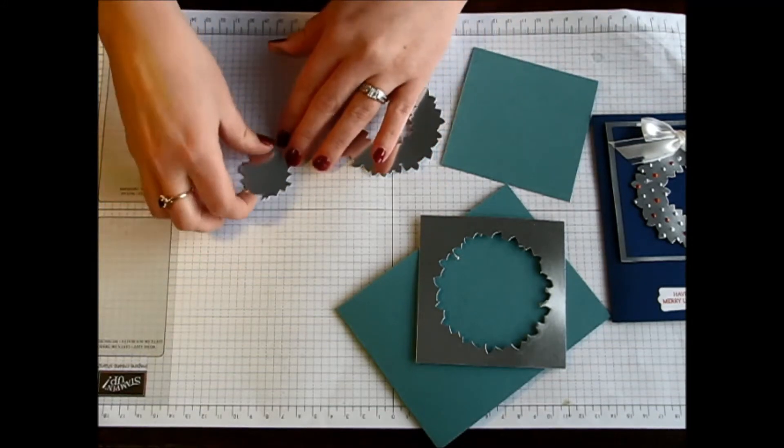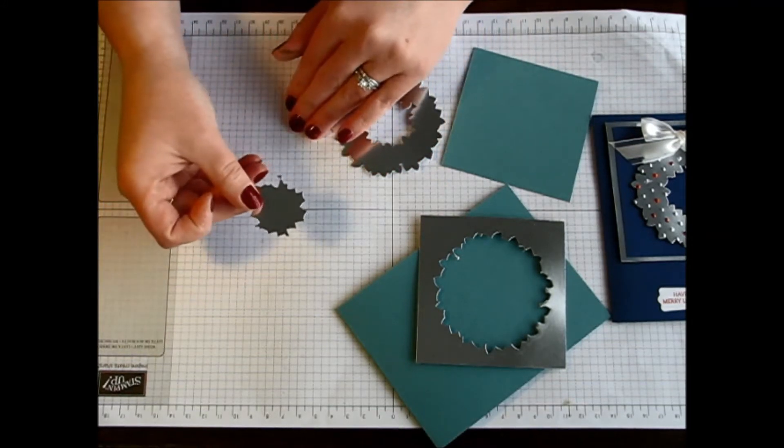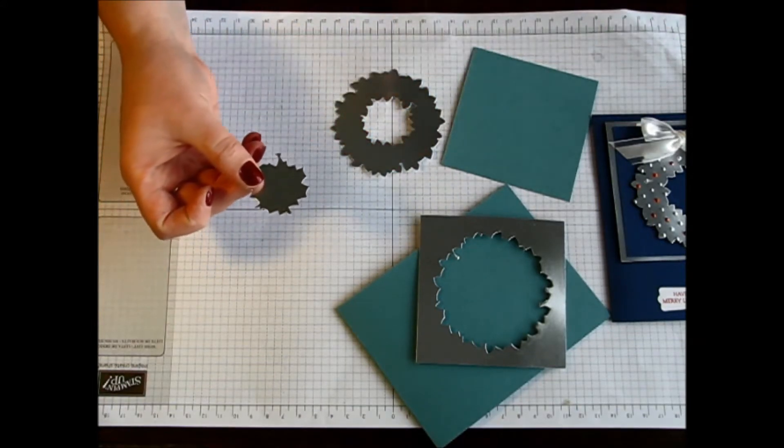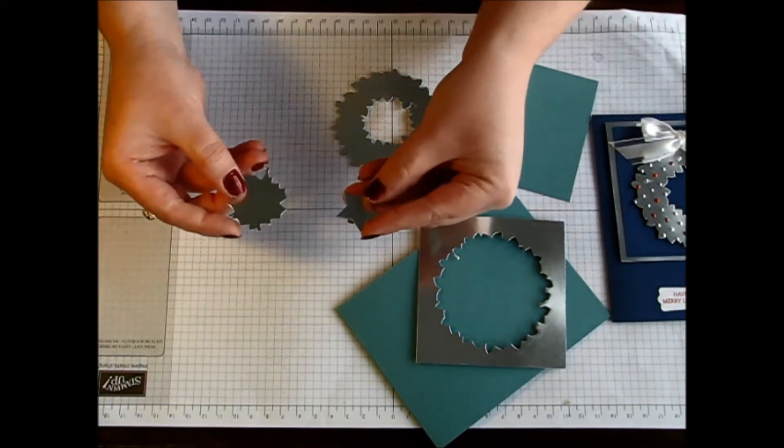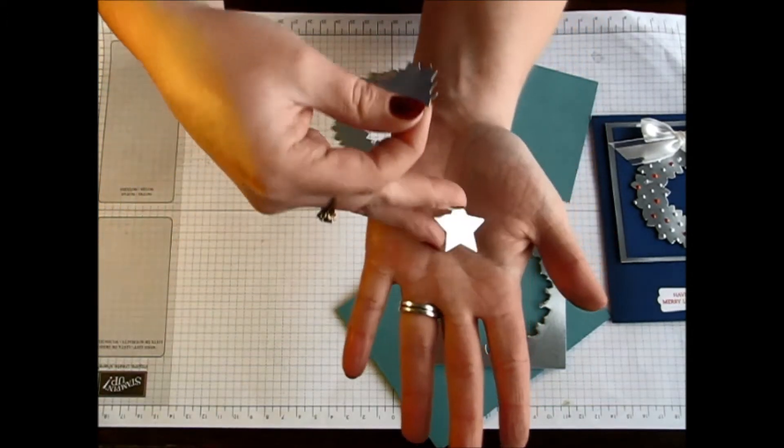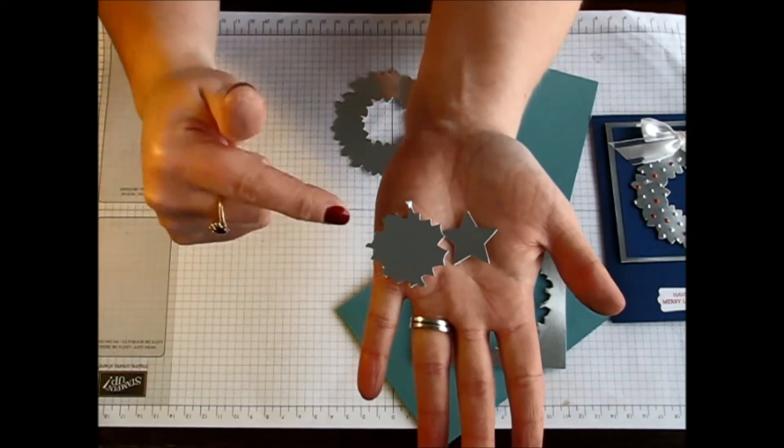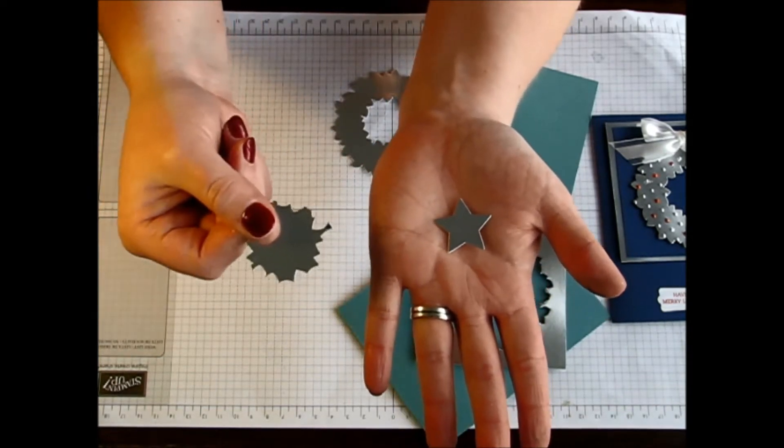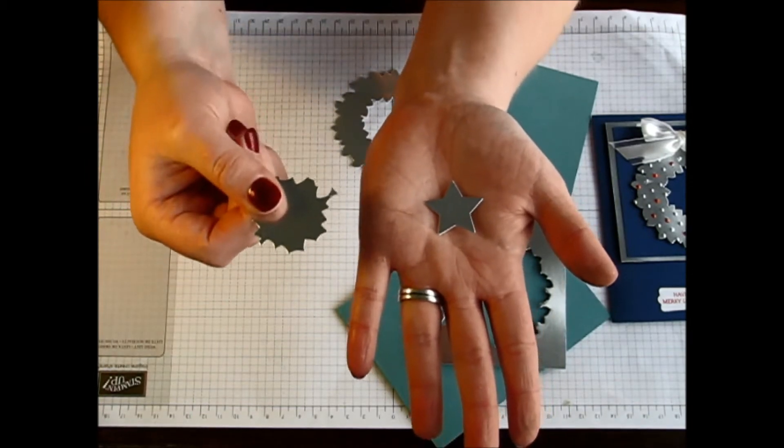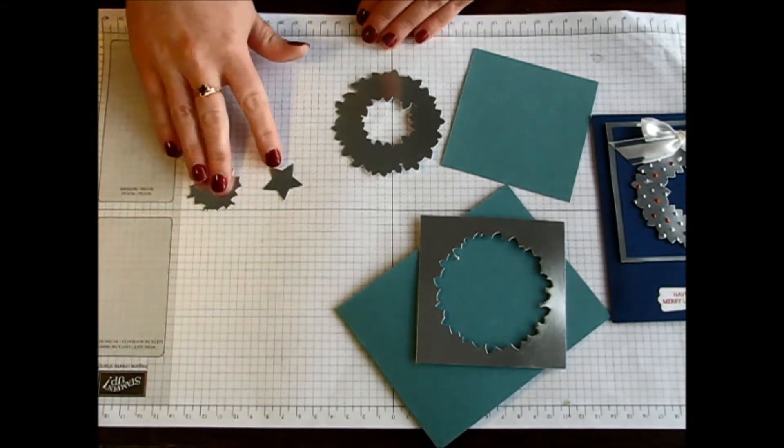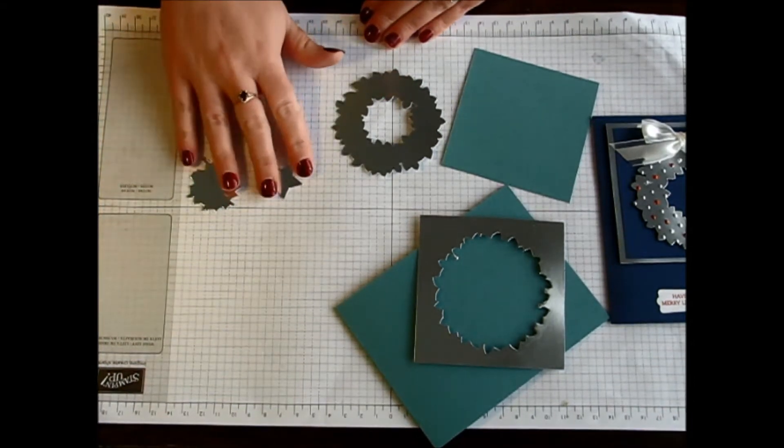The other cool thing that I noticed was this little piece, you can use your star framelits and you can actually get this little bitty star out of it. So that little star can be created out of this. So you can still use this little scrap piece for even another project. How amazing is that? I love being able to use my scraps for projects so that I don't feel like I am wasting them.